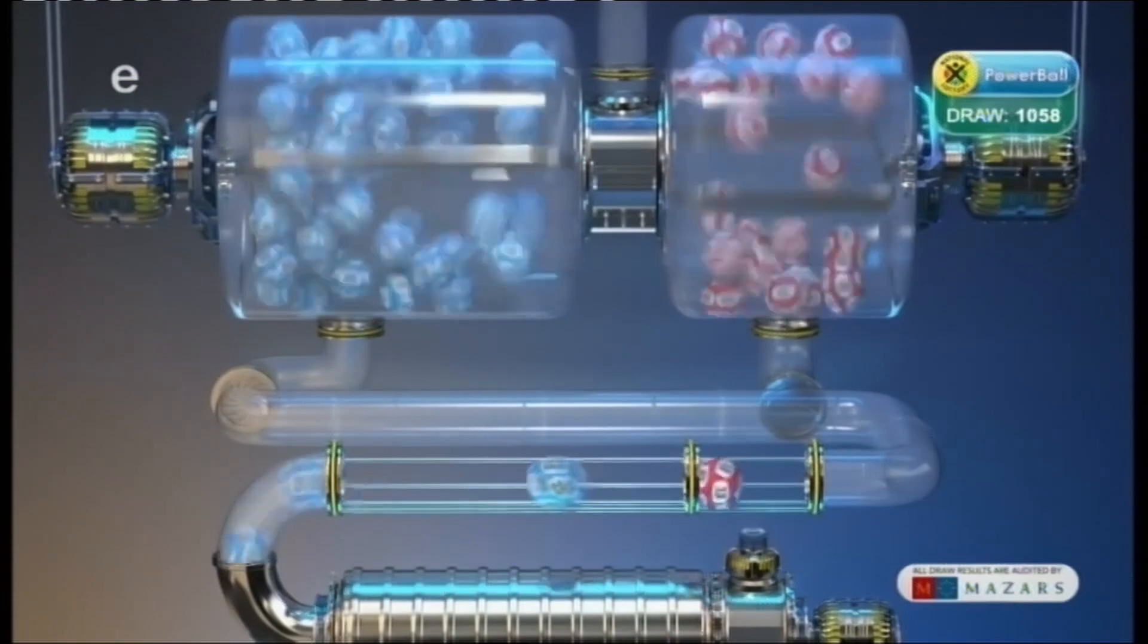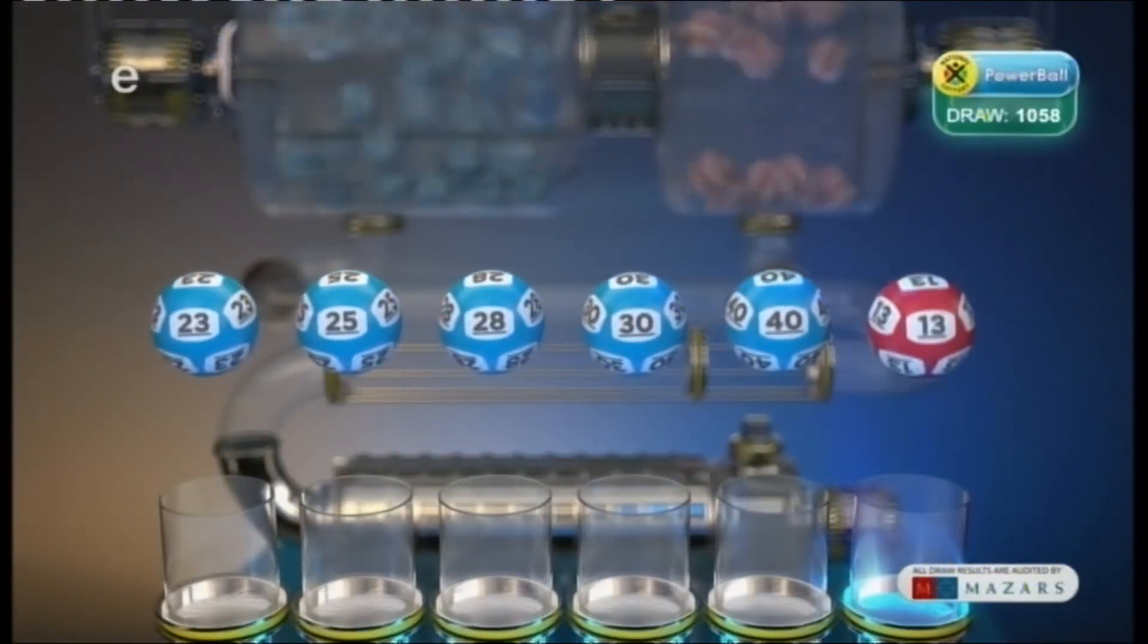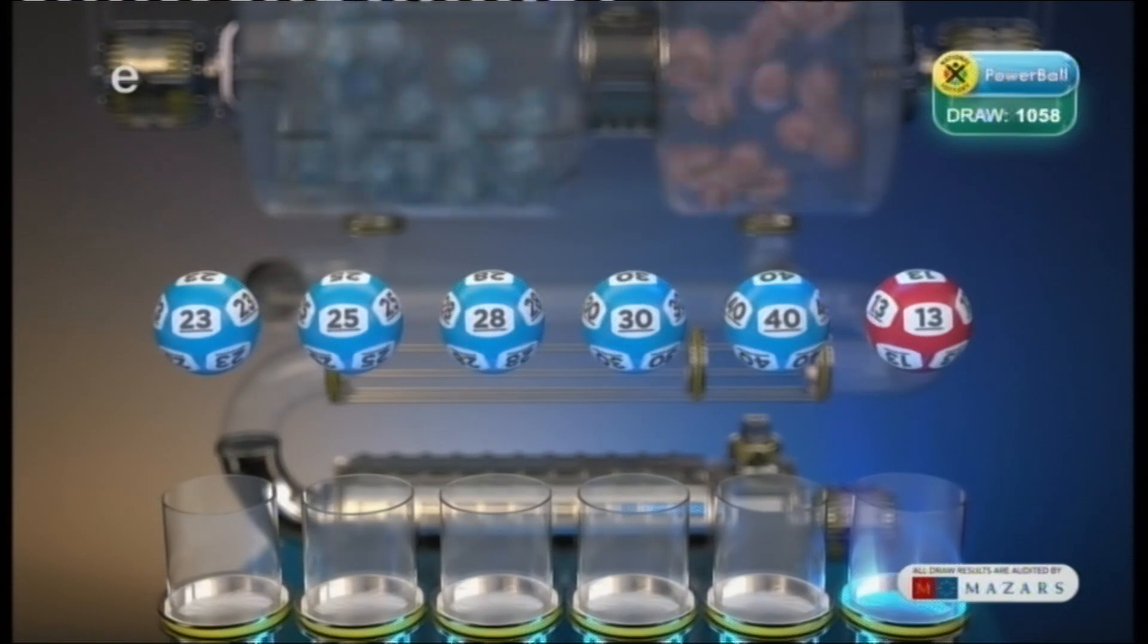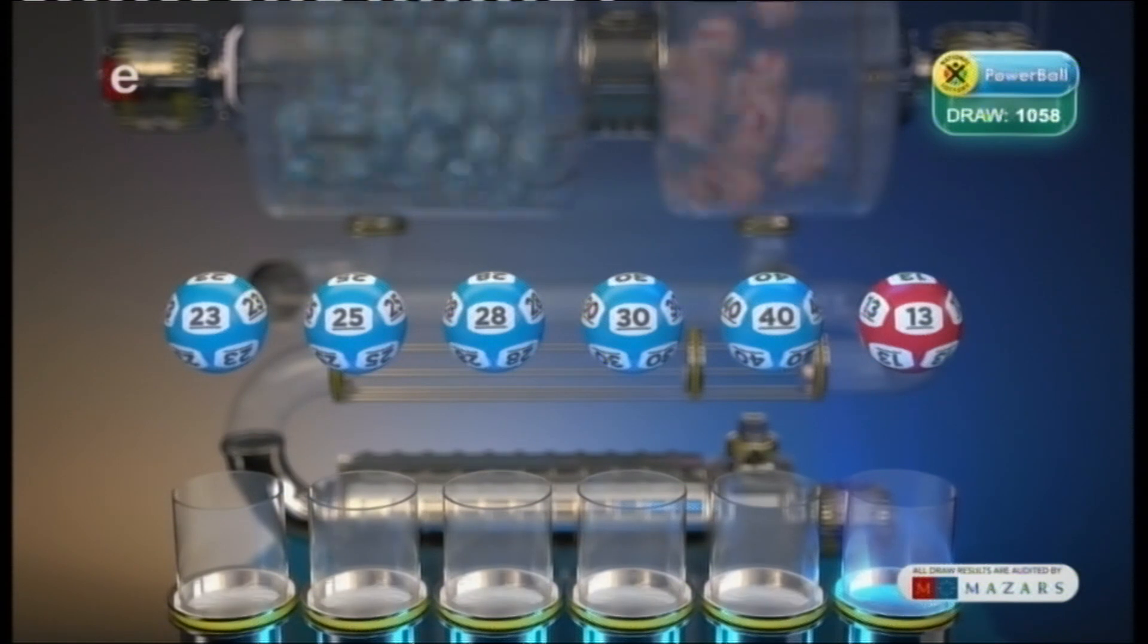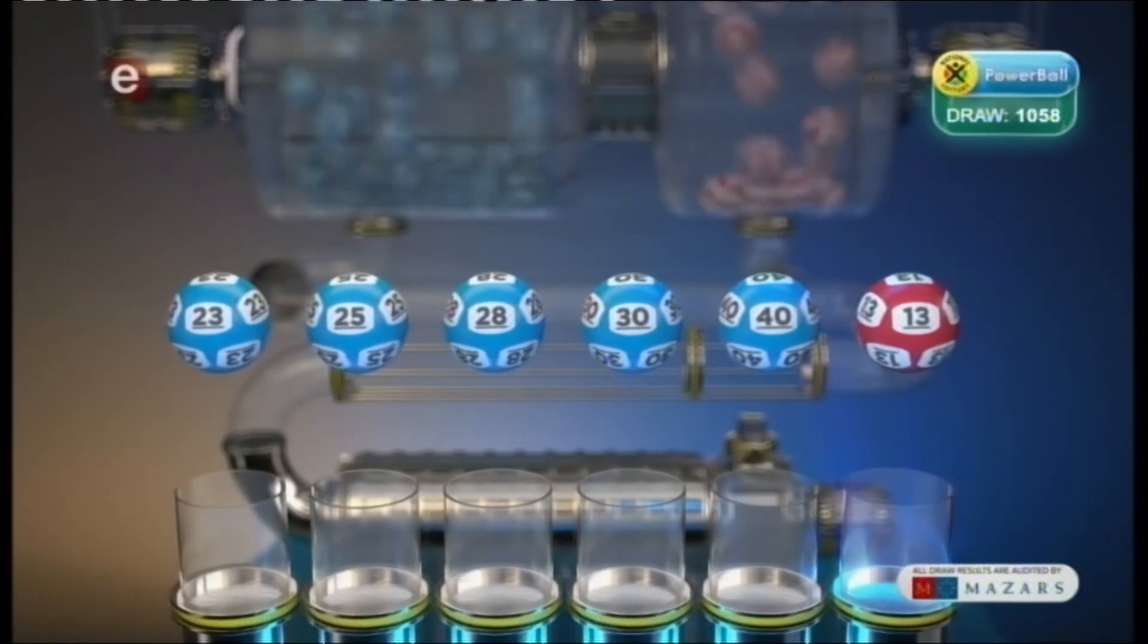Let's recap these numbers in numerical order. 23, 25, 28, 30, 40, and the Powerball is 13.